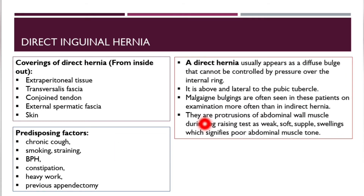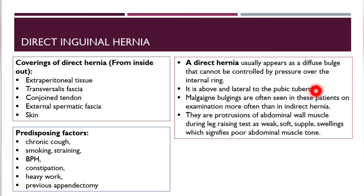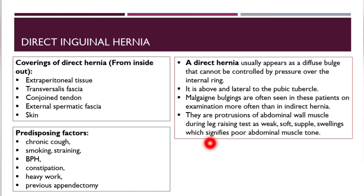A direct hernia usually appears as a diffuse bulge that cannot be controlled by pressure over the internal ring. It is located above and medial to the pubic tubercle.